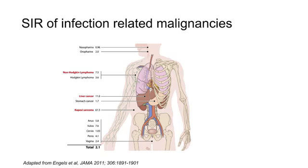First, we look at the infection-related malignancies in this picture of the human body. Demonstrated is the standardized incidence ratio, which is calculated as the quotient of the observed and the expected number of cases of infection-related malignancies in transplant recipients. As you can see, the standardized incidence ratio of non-Hodgkin lymphomas is 7.5 times increased and liver carcinoma is 11.5 times increased. In addition, some relatively rare malignancies have a high frequency — for example, Kaposi's sarcoma is 61 times increased. So you see that the risk of infection-related malignancies is markedly increased.